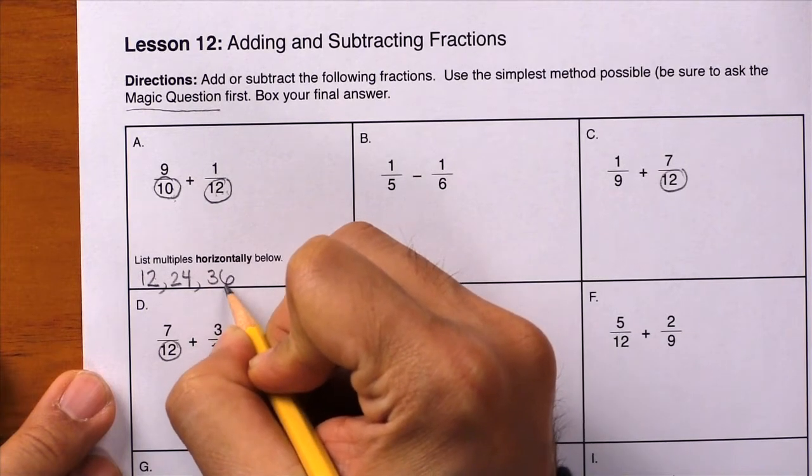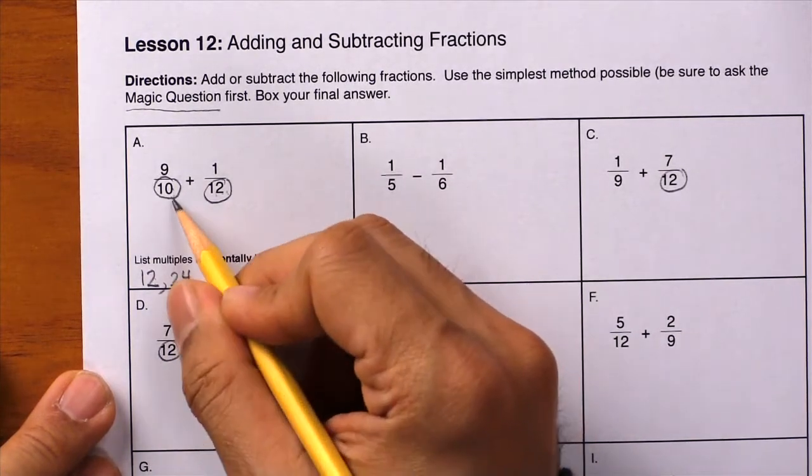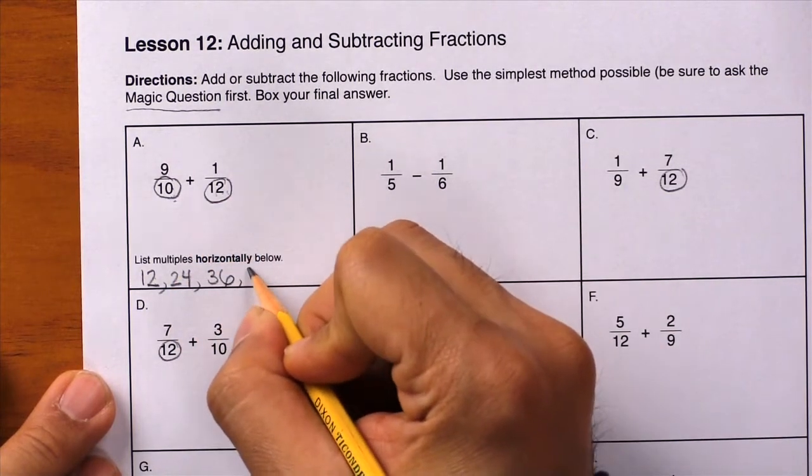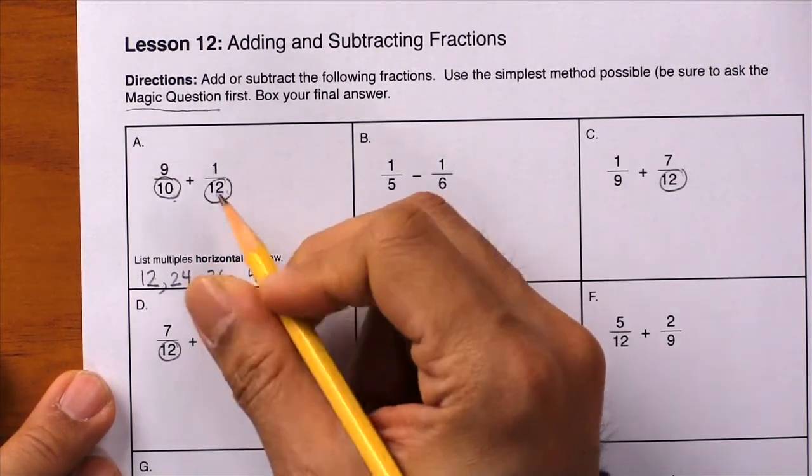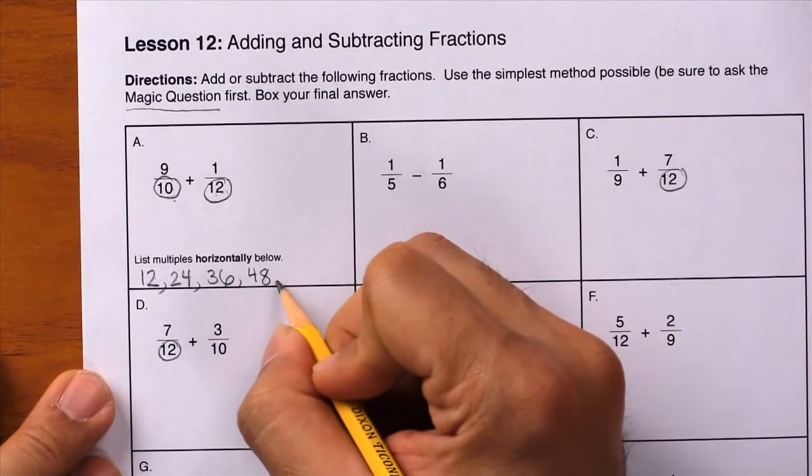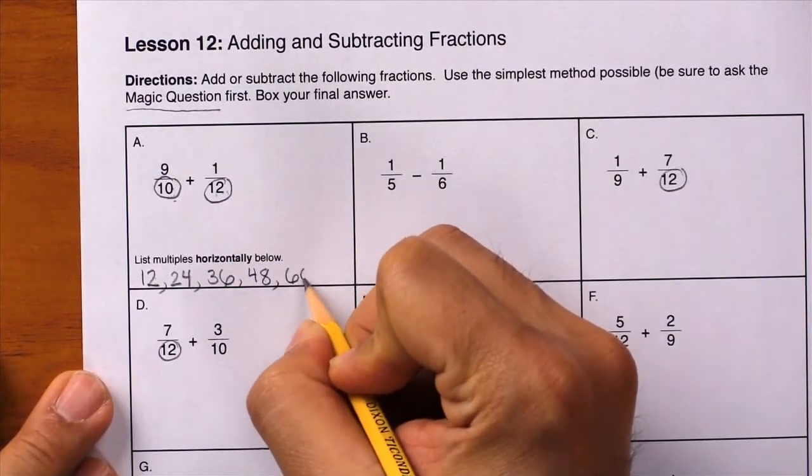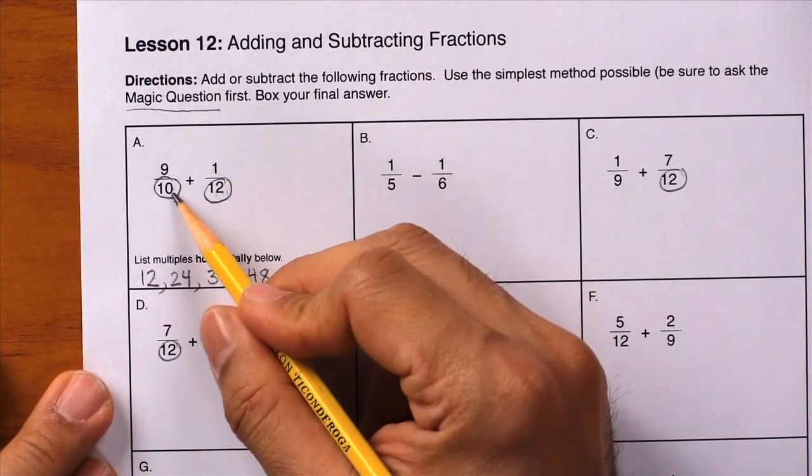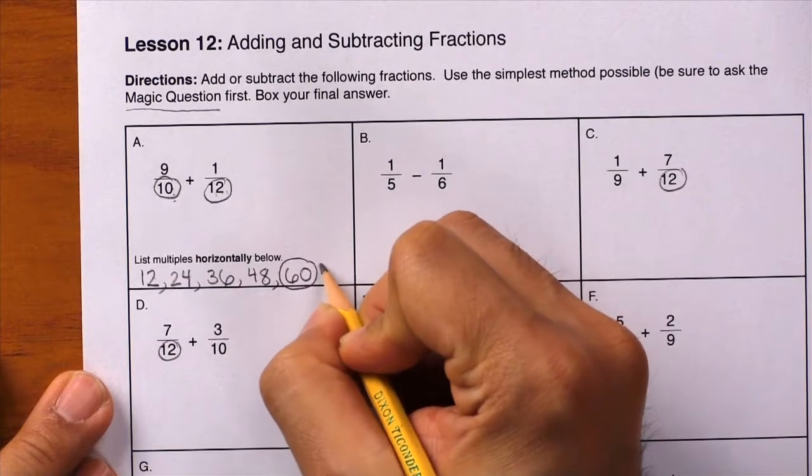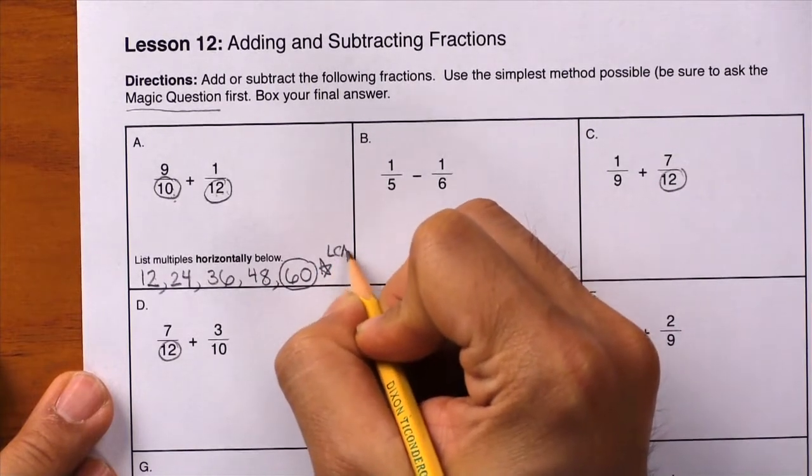Next is 36. 36 divided by 10? Nope, keep counting by 12. 48 divided by 10? Can you do that? And yes. Circle and star. 60 is our LCM.